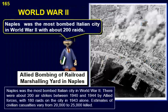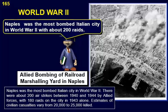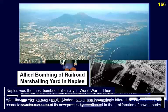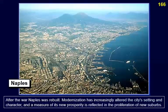There were about 200 airstrikes between 1940 and 1944 by Allied forces, with 180 raids on the city in 1943 alone. Estimates of civilian casualties vary from 20,000 to 25,000 killed. After the war, Naples was rebuilt; modernization has increasingly altered the city's setting and character, and a measure of its new prosperity is reflected in the proliferation of new suburbs.